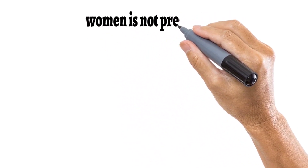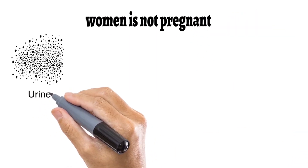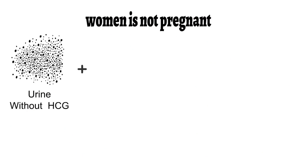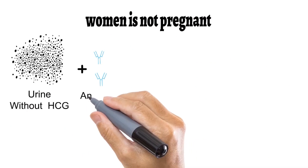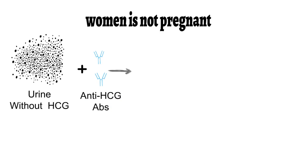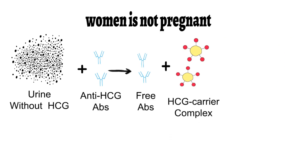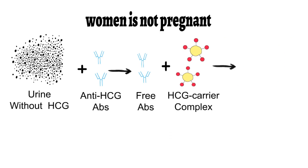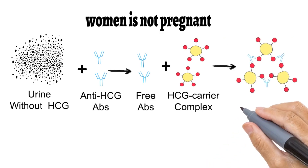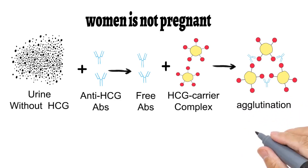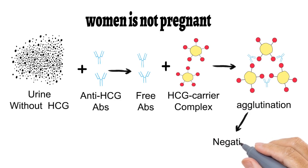Now let us assume the woman is not pregnant — meaning no HCG molecules are present in the urine. In this case, we again first mix the urine sample with anti-HCG antibodies. Since HCG is absent, the antibodies will remain free. Then we add the HCG-carrier complex in the second step. The free antibodies will react with these molecules, resulting in visible agglutination. So agglutination is the negative test, meaning the woman is not pregnant.